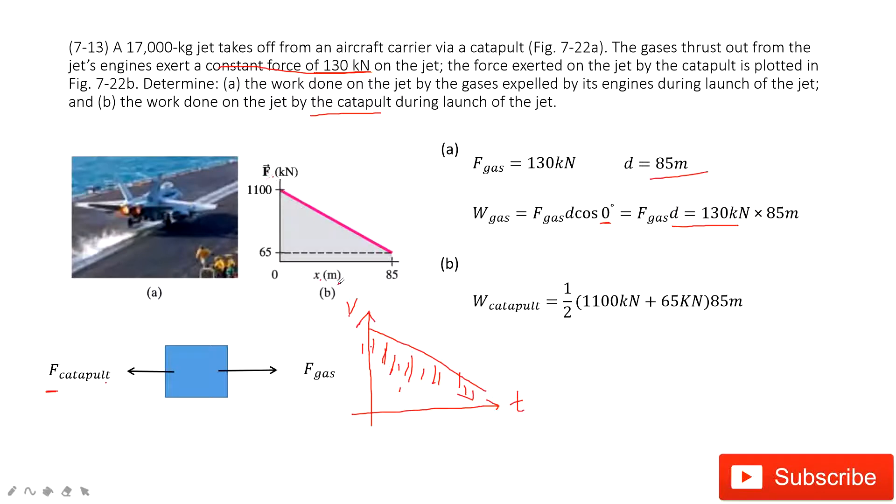And the cosine theta is zero, so it is 1. So it is F times D. And this F keeps changing with D. So we can consider the work in this process is just the area under the line.